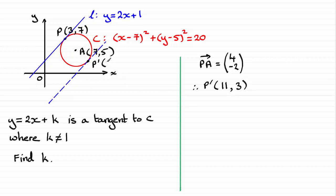So, p dash has coordinates then of 11, three. And all I need to do now is just substitute this set of coordinates into this equation here. Must satisfy that equation because this point lies on it.